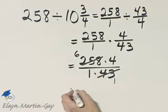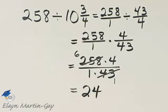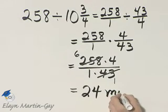So I have 6 times 4 over 1 times 1 or 24. So how far on one gallon? It would be 24 miles.